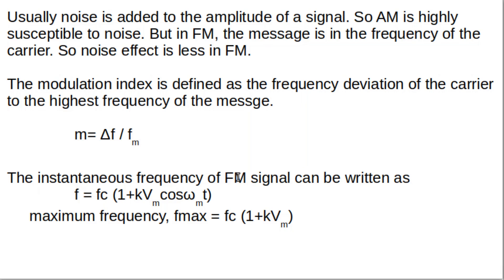The instantaneous frequency of an FM signal can be written as: f = fc × (1 + k·Vm·cos(ωm·t)), where fc is the original carrier frequency, k is a proportionality constant, and Vm·cos(ωm·t) is the message signal. As the message signal amplitude varies, the instantaneous frequency also varies. The maximum frequency in an FM signal is fmax = fc × (1 + k·Vm), since the maximum value of cos(ωm·t) is 1.